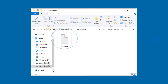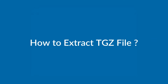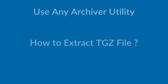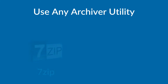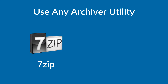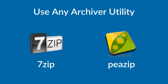The output file is in TGZ file format. Let's check how to extract a TGZ file. Use any archiver utility like 7-Zip, re-zip, etc. for extracting the TGZ file.